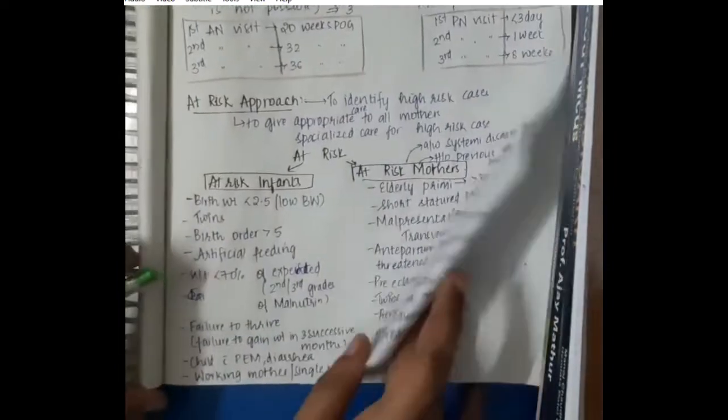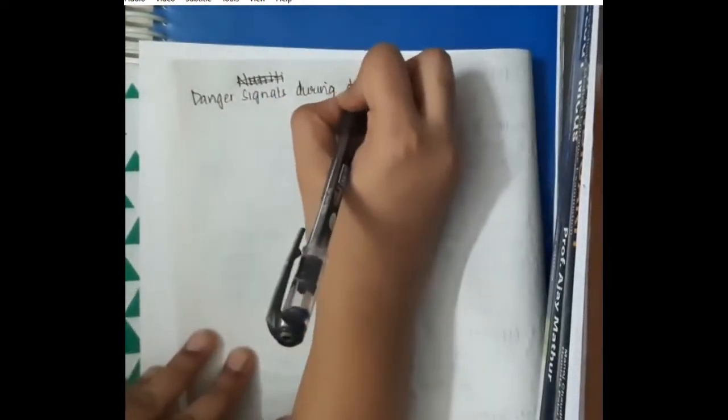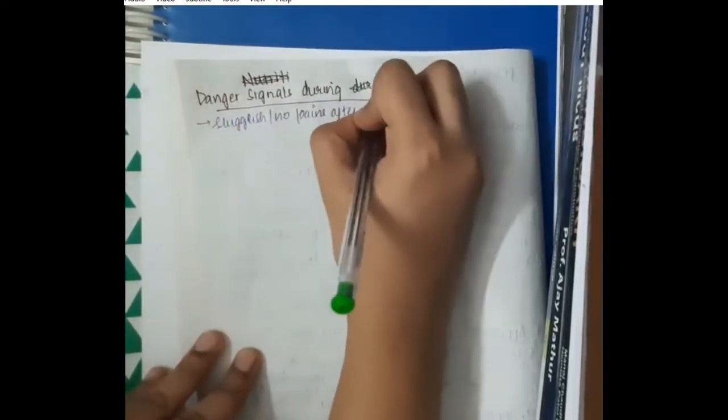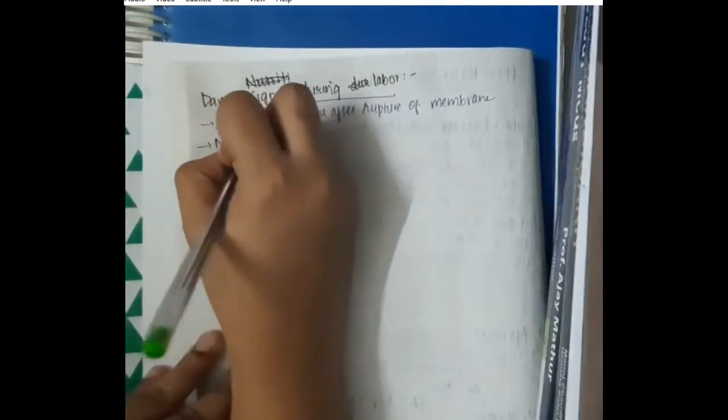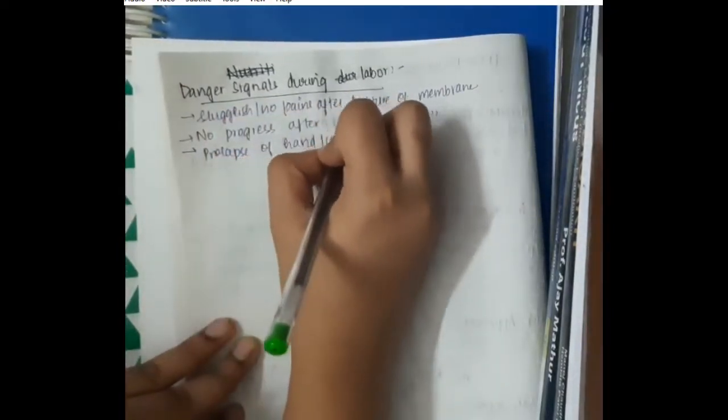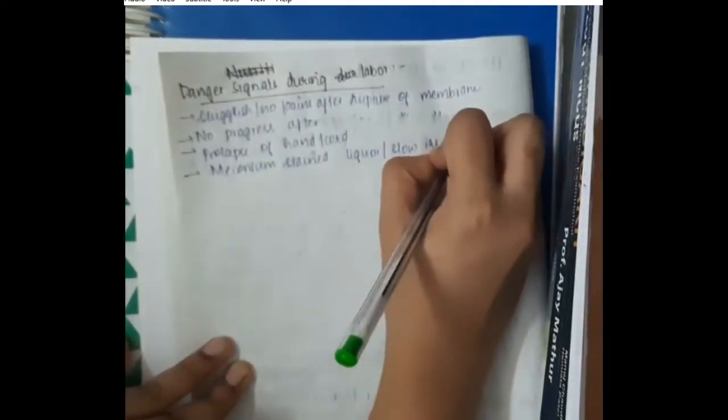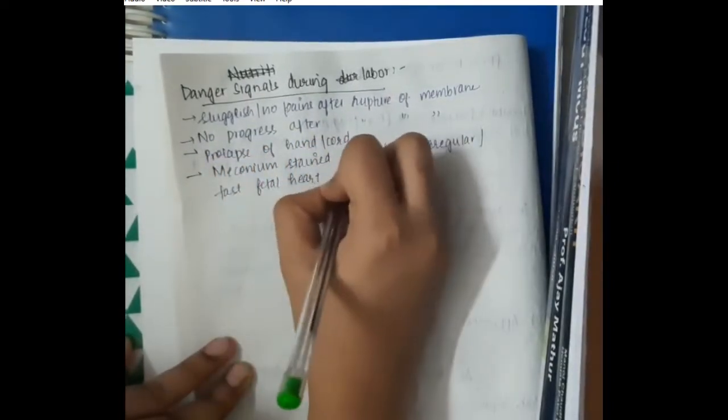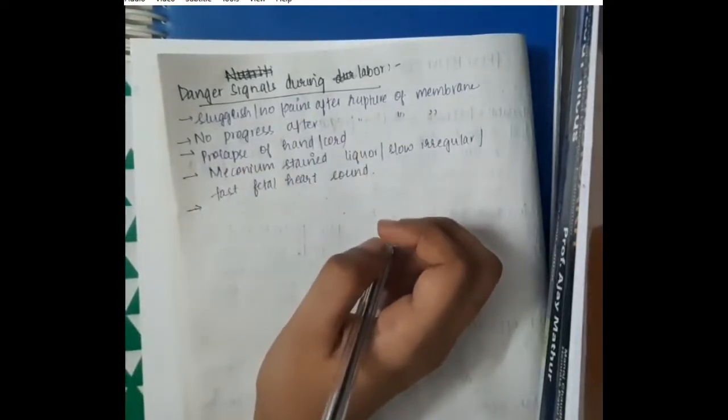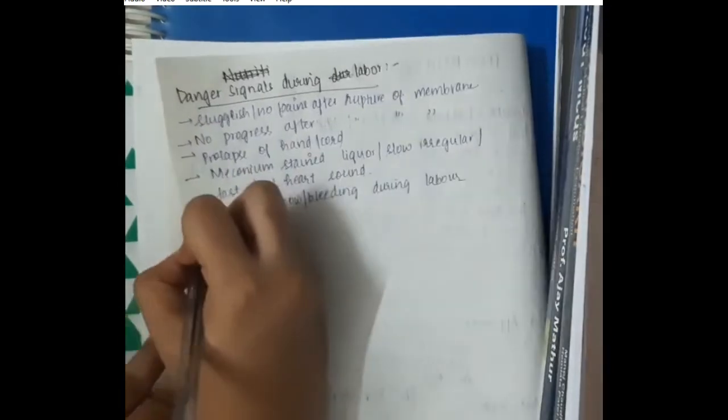Then we will have to learn about the danger signals during labor. Danger signals during labor include if the patient has any of these danger signals then she should be immediately referred to the higher center for specialist help. The danger signals include sluggish or no or half pains after rupture of membranes, no progress of labor after rupture of membranes. Because in these cases we should at least do induction of labor. Prolapse of hand or cord because immediate caesarean section might be required. Meconium stained liquor or slow irregular or fast fetal heart sound. This indicates respiratory distress in newborn. Bag and mask ventilation or further intubation might be necessary in those babies. Sometimes excessive show or bleeding during labor. Bleeding during labor may predispose the mother to shock.